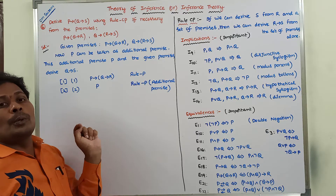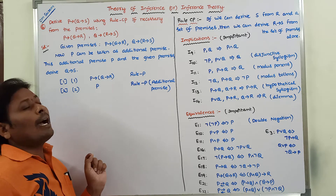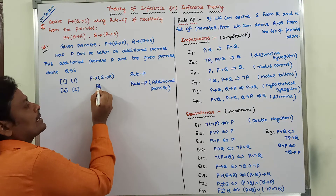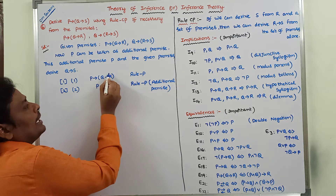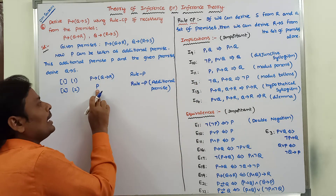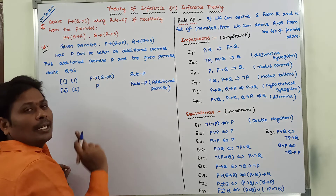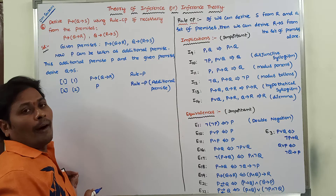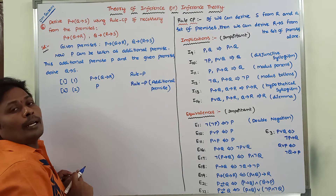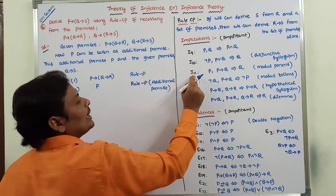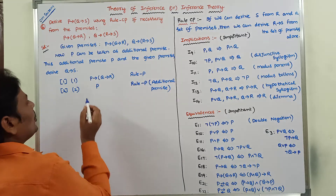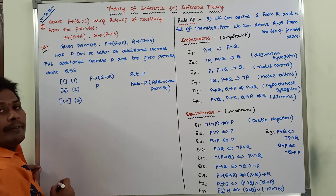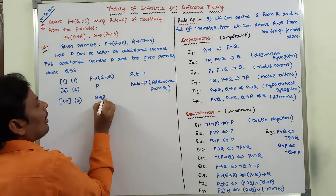From these two steps, we have to derive another formula by using I11. The I11 rule states: P, P conditional Q implies Q. Here P is there, and in P conditional Q, in the place of Q, Q conditional R is there. So P, P conditional Q conditional R implies Q conditional R by using implication rule I11. By combining steps 1 and 2, we get Q conditional R in the third step.